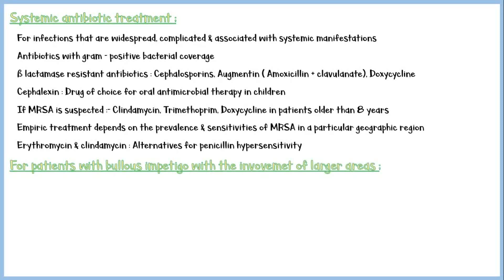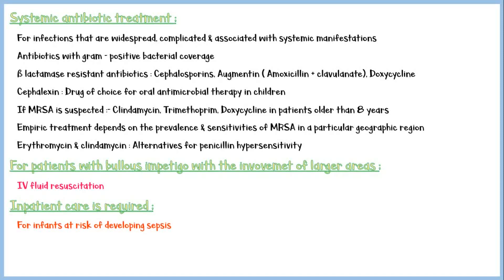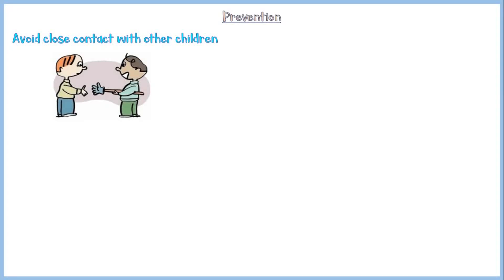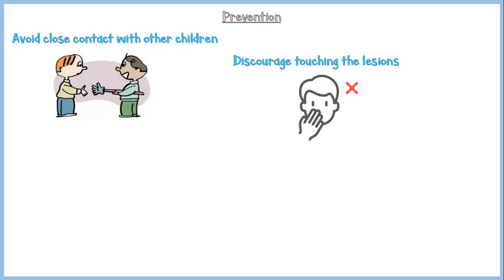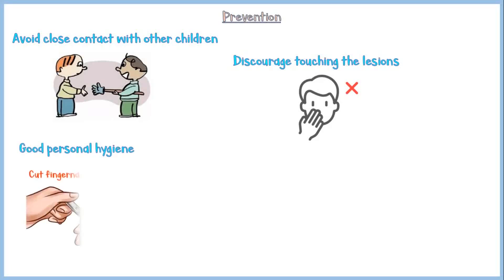For patients with bullous impetigo involving larger areas of skin loss, intravenous fluid resuscitation may be needed due to extensive dehydration. Inpatient care may be required for infants at risk of developing sepsis and dehydration. To prevent spread of the disease, children should avoid close contact with other children, discourage touching the lesions, and maintain good personal hygiene — for example, cutting fingernails short and frequent hand washing.